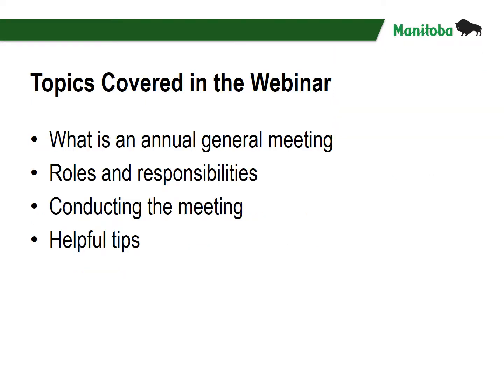This is the second of two in our series on Annual General Meetings. Today, we will be covering these topics: What is an Annual General Meeting? Roles and Responsibilities of Members, Board, and Executive. Conducting the Meeting. Helpful Tips. Please refer to Annual General Meetings Part 1 for information on why the AGM is important, best practices, and preparing for the AGM.